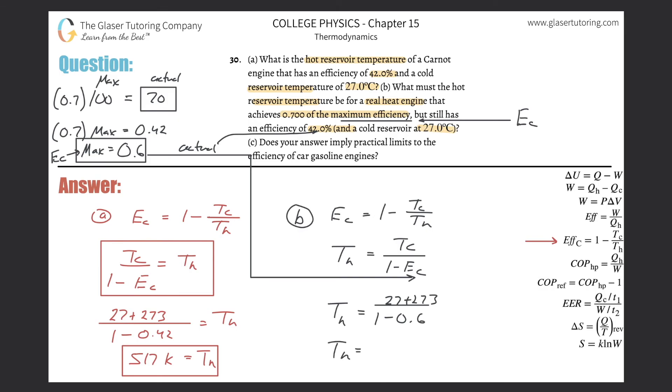So let's see what we get. So we get now 300 in the numerator, essentially, divided by 1 minus 0.6. And now we get about 750 Kelvin. And that's in terms of Kelvin again. If you need it in Celsius, simply subtract the 273. And letter C, does your answer imply practical limits? Sure.